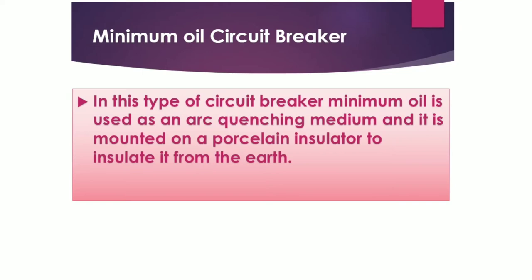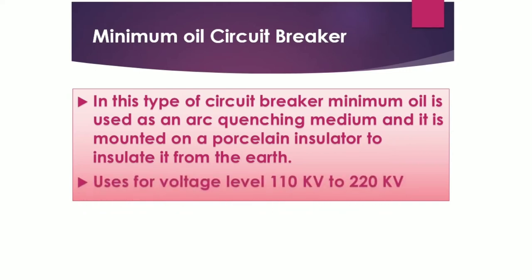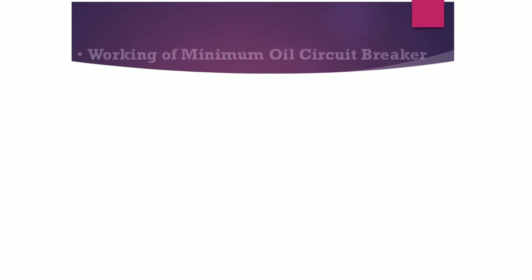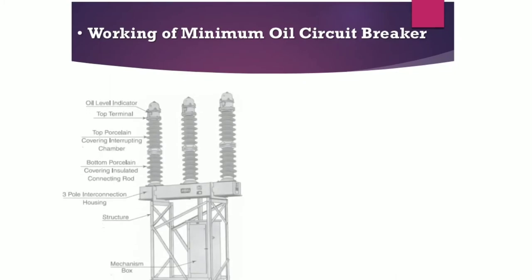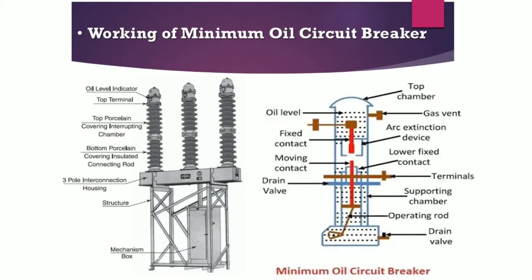The medium oil circuit breaker is quite similar to the bulk oil circuit breaker. In this type, a minimum amount of oil is used as the arc-quenching medium. It is mounted on a porcelain insulator to insulate it from earth. It is used for voltage levels of 110 kV to 220 kV. You can see the outer and inner portions of the medium oil circuit breaker. It is used for some lower voltage transmission lines compared to bulk oil breakers.